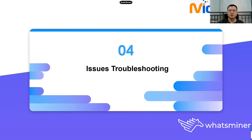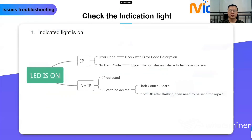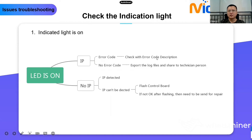Issues Troubleshooting. When the device has issues, how to process it, find the root cause, and what the error codes mean — I will introduce these in this section. First, when your device has an issue, check the indication light. If the indication light is on, check whether the IP can be found on the web page or What's Miner Tool. If you can find the IP, check the error code — you can look it up in our error code description file. If there is no error code, you may need to export the log files to share with a technician.